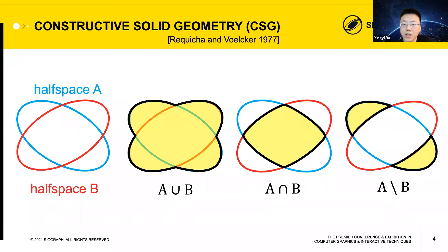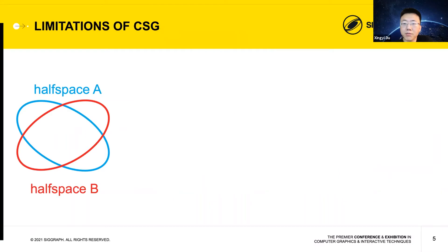However, CSG has several limitations due to the use of Boolean operations. First, CSG cannot express all shapes represented by a set of half spaces. For example, suppose we want to represent this yellow shape using CSG bounded by the two ovals. This shape is not the result of any of the three Boolean operations shown on the previous slide.